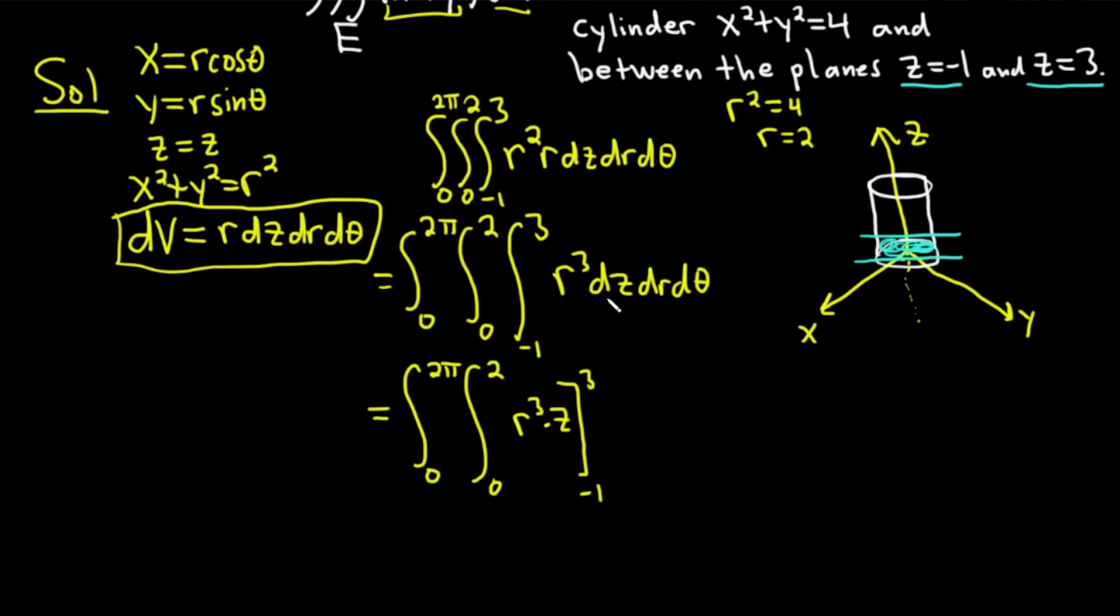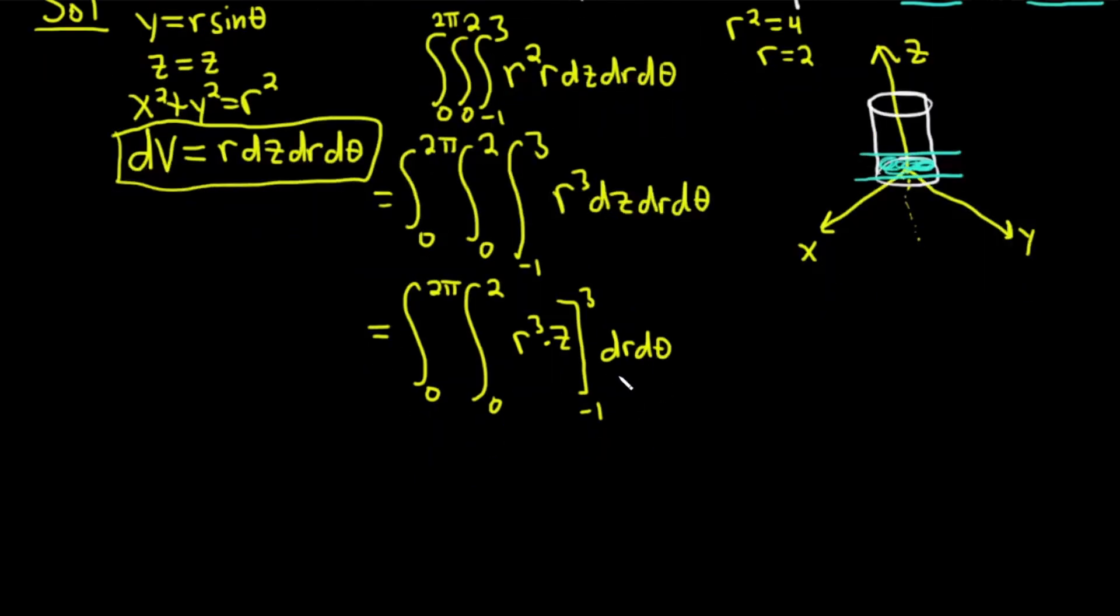We integrated with respect to z, so we drop the dz. Now we have dr, d theta. All right, let's keep going.